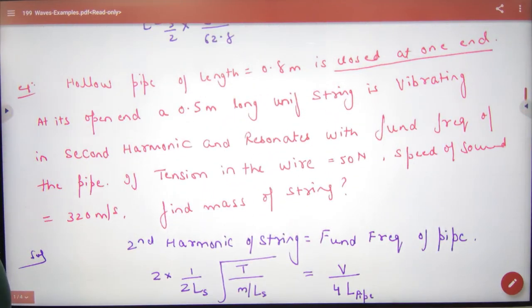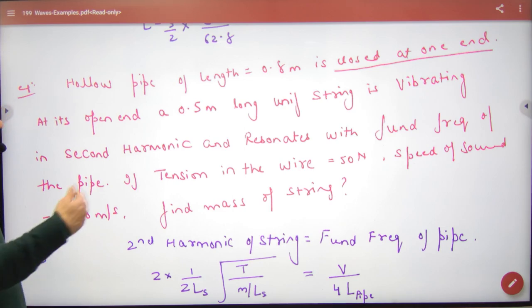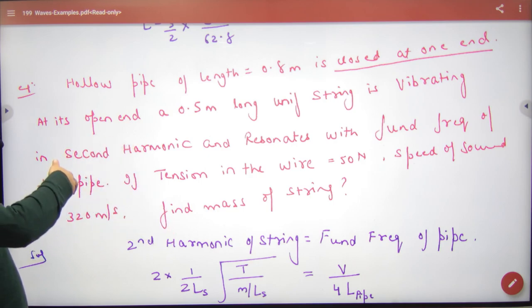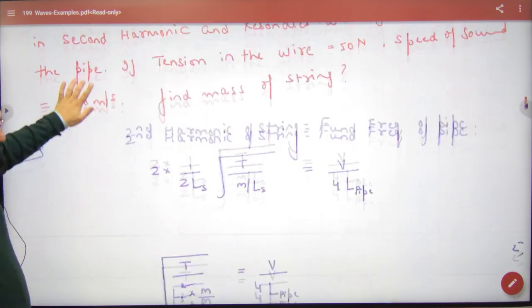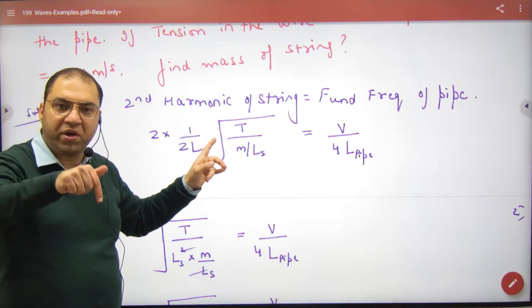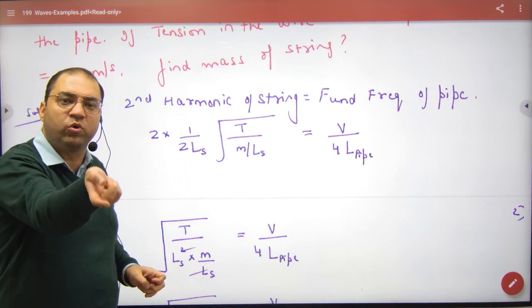This is a question. A hollow pipe with given length is closed at one end. At its open end, a 0.5 meter long uniform string is vibrating in second harmonic and resonates with the fundamental frequency of the pipe. The second harmonic frequency of the string equals the fundamental frequency of the pipe, so the frequencies are the same.